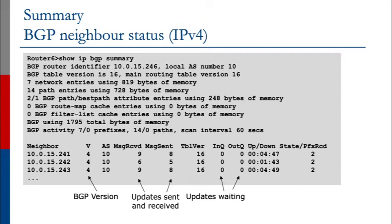First off, you have a column listing the IP addresses of the neighbors. It then displays the BGP version number — we use BGP version 4 today, as you have already learned. Then it lists the autonomous system number, the messages received and sent. These are the updates that have been sent by the router and received by the router from each individual neighbor.